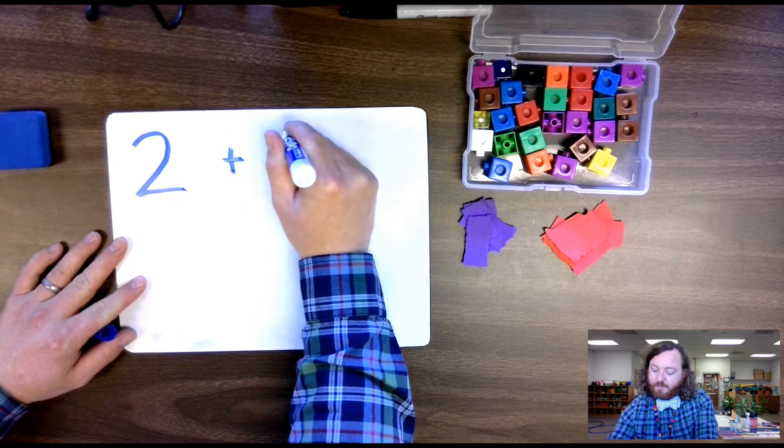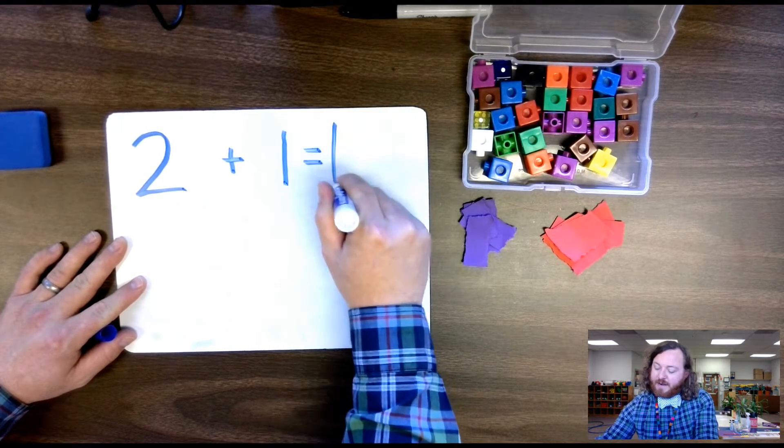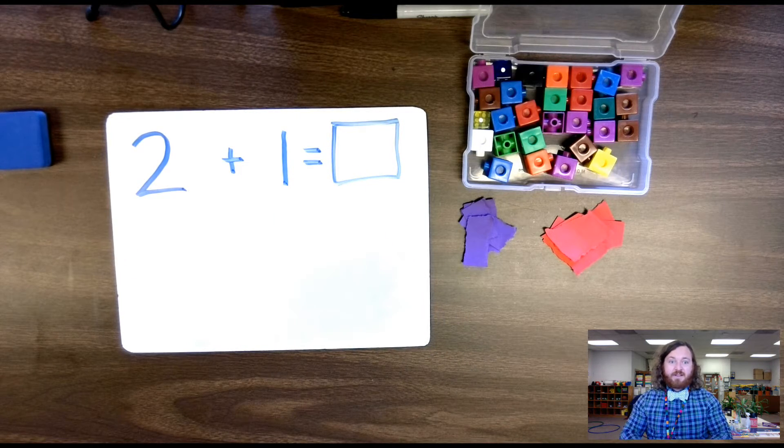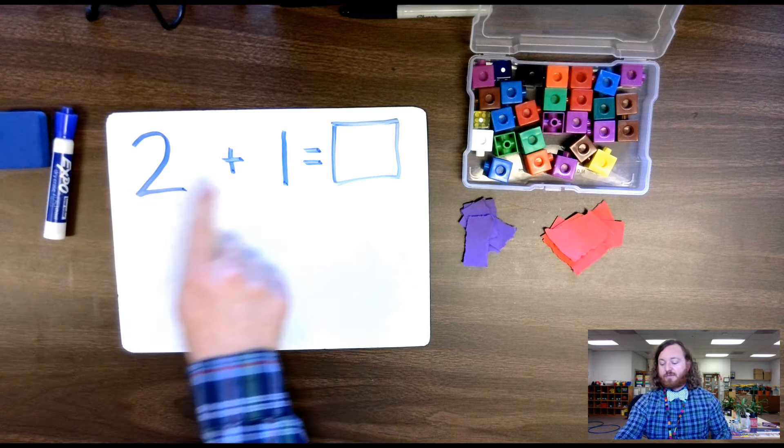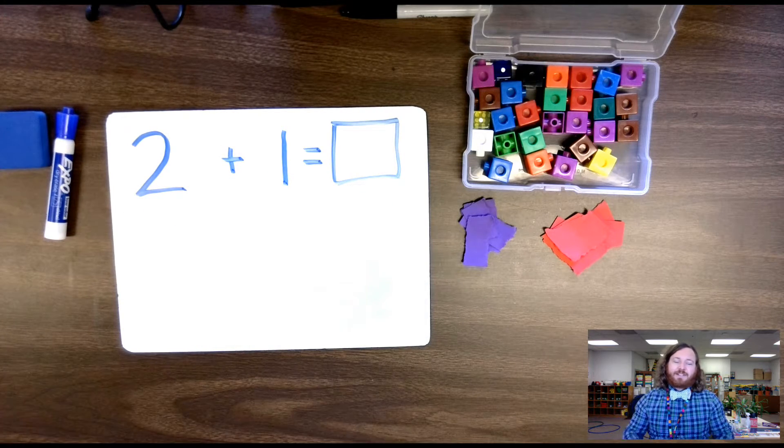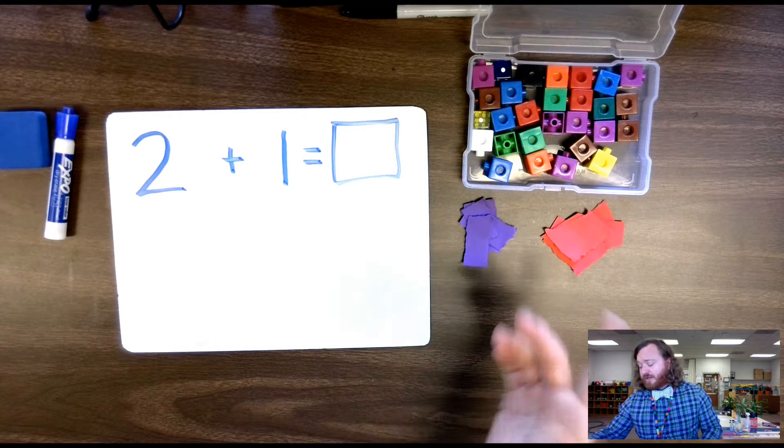Two plus one equals, and I'm going to draw a box, and that just lets me know that I need to put some kind of answer there. Okay, so two plus one equals, I always do the sound when I don't know. Okay, so we're going to use the first strategy that I talked about. We're going to use paper.